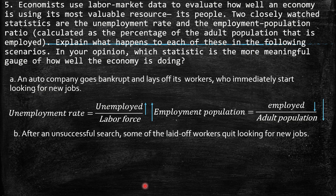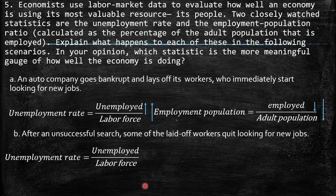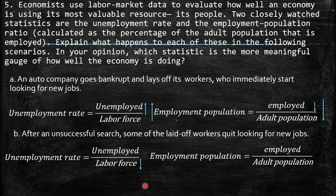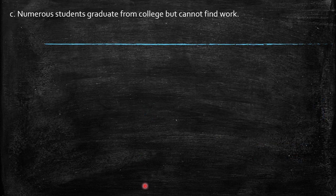B: after an unsuccessful search, some of the laid-off workers quit looking for new jobs — discouraged workers. The labor force decreases because they no longer belong to the employed or unemployed. Unemployed also decreases because they are no longer looking for work. So there is no effect on the unemployment rate, though this is not a good sign. For the employment-population ratio, employed people remain the same and adult population remains the same, so it also remains the same.